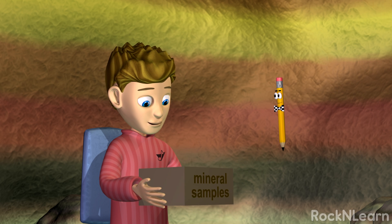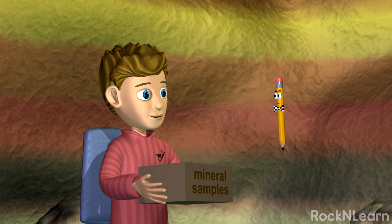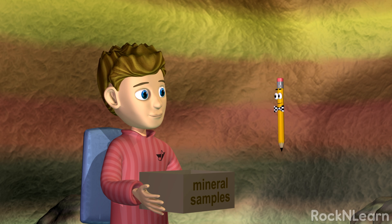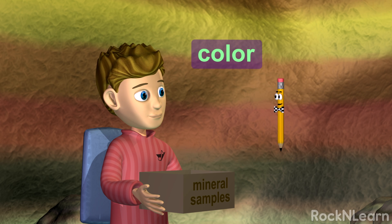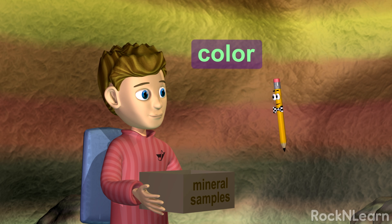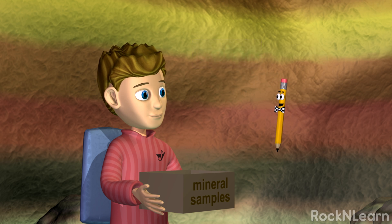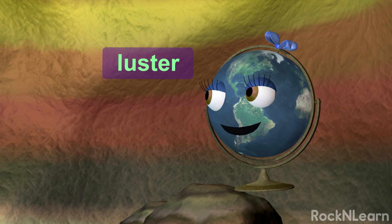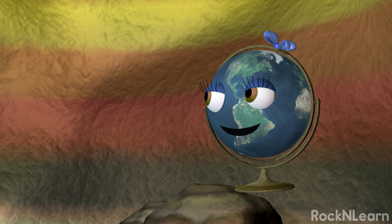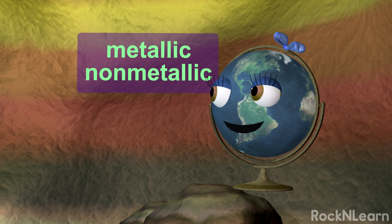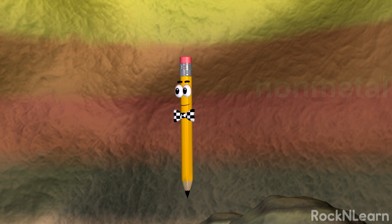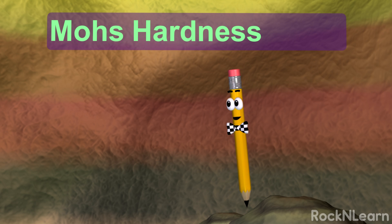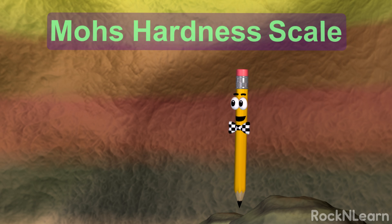Look at these! I wonder what minerals they are. If I describe their properties, that might help me to identify them. The color of a mineral is the first thing people tend to notice, but be careful — most minerals can occur in more than one color. Luster describes how light is reflected from the surface of a mineral. The two main types of luster are metallic and non-metallic. The hardness of a mineral is its ability to resist scratching. The Mohs Hardness Scale uses ten minerals to rank hardness.